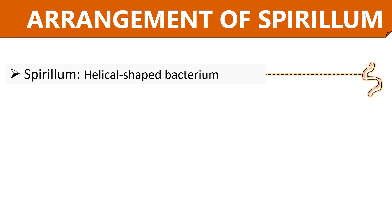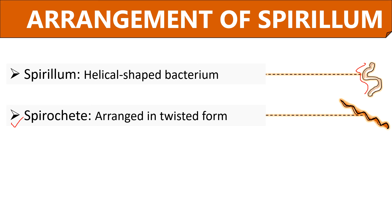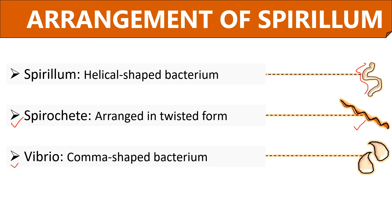Now we will discuss the arrangement of Spirulum. Spirulum cells have a rigid spiral or helical shape. Unlike cocci and bacilli, spirula appears singly; its helical shape is due to twisting within the cell, and spirula are commonly of two types. First is Spirochete, where a cell goes through two or three complete twists and they are highly flexible in structure. Second is Vibrio, where the cells appear comma shaped due to one complete twist.